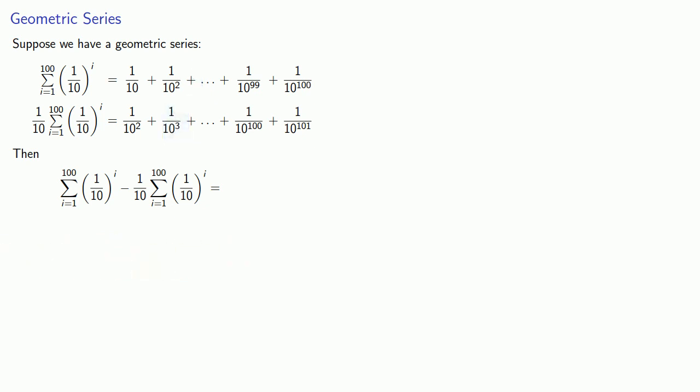And so on until this 1 over 10 to the 100th in the subtracted series cancels out this 1 over 10 to the 100th in the original series. And that means that when we find the difference, the only terms that are left are the 1 over 10 in the original series minus the 1 over 101 in the subtracted series.